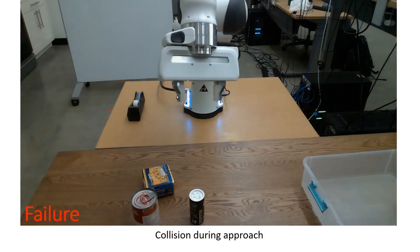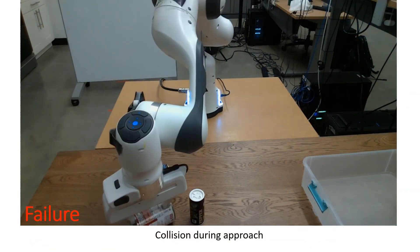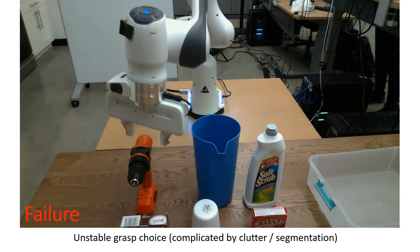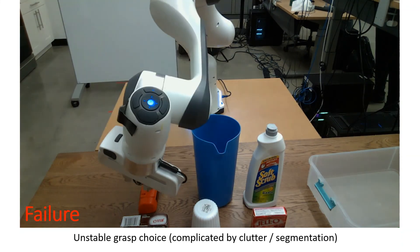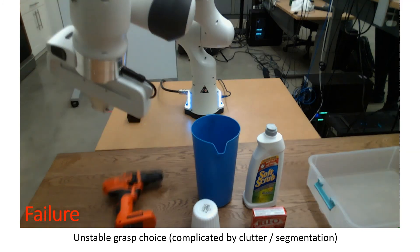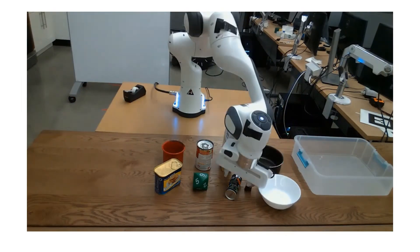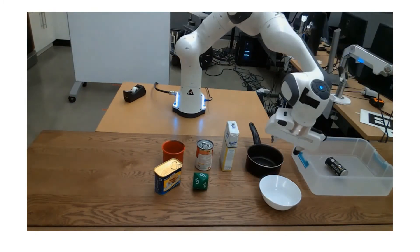Failure cases include collisions during approach and unstable grasp choices that can arise from segmentation errors or clutter. However, often our approach can also handle imperfect segmentation masks because they are only used to filter scene grasp predictions. Since we still have time, here are some more fast-forward grasps of the robot.